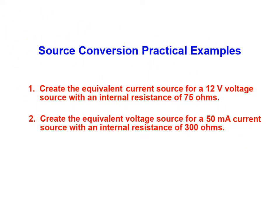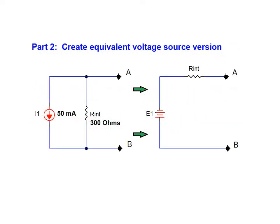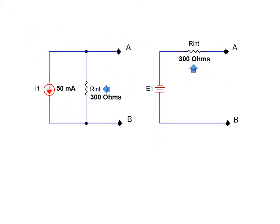We'll now move on to the second part of our example and perform the same type of conversion in reverse. We begin with our 50 milliamp current source which has an internal resistance of 300 ohms. Once again the same internal resistance is used when doing the conversion.